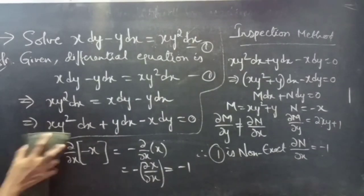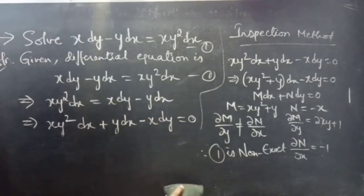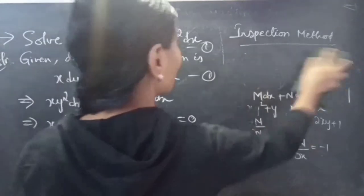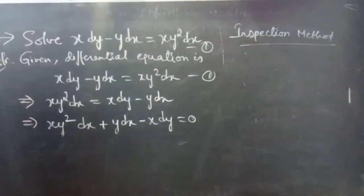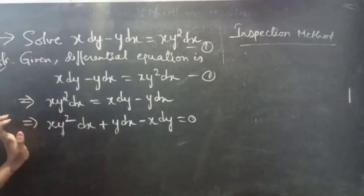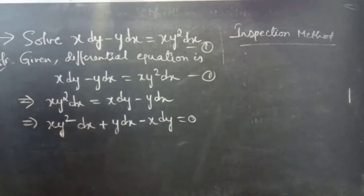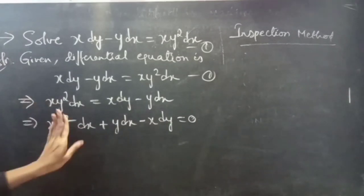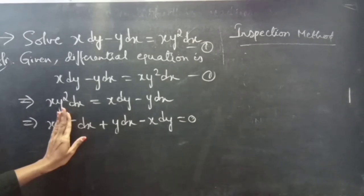Since equation 1 is non-exact, we have to reduce the given equation to an exact equation. For that purpose we will use the inspection method — that is, we will use differential formulas to solve the problem. We notice we have y squared here; if we can remove y squared we would get x dx, which is easy to integrate.